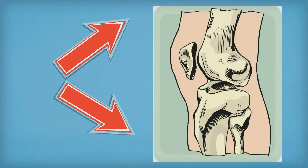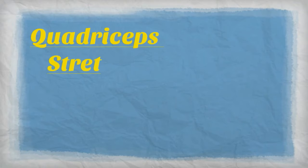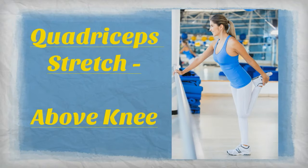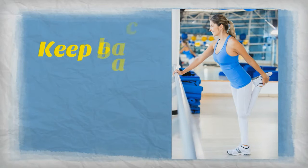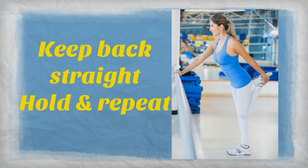A quadriceps stretch is an easy and quick way to stretch the muscle above. Put one hand on a stationary object for balance. Using the other hand, grab your leg around the ankle and lift it toward your backside. Keep your back straight and don't slouch forward. Hold the stretch for 10 seconds and repeat several times.